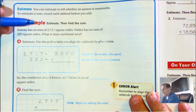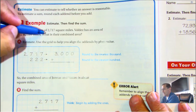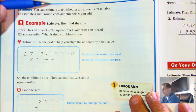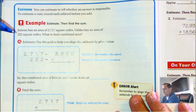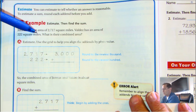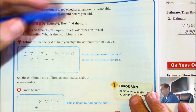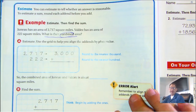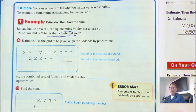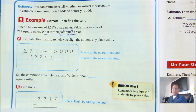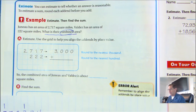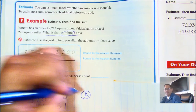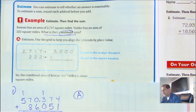Juneau has an area of two thousand seven hundred seventeen square miles. Valdez has an area of two hundred twenty-two square miles. What is their combined area? The keyword here is 'combined' — that's a clue that we're adding. It says use the grid to help you align the addends by place value.